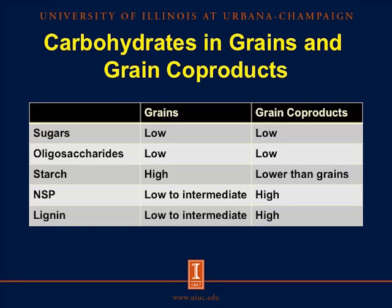So what are some of these carbohydrates in grains and grain co-products? Sugars and oligosaccharides are both low in grains and grain co-products, whereas starch is high in grains but lower in grain co-products. Non-starch polysaccharides and lignin are low to intermediate in grains and high in grain co-products. For the remainder of this presentation, I'll be focused on starch and non-starch polysaccharides because of the difference between grains and grain co-products.